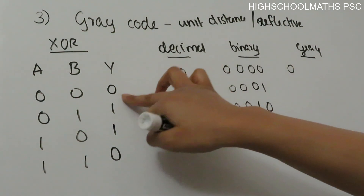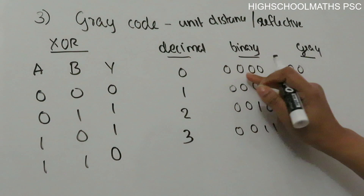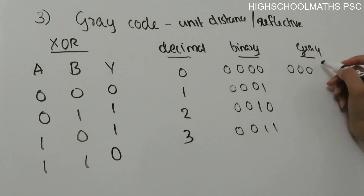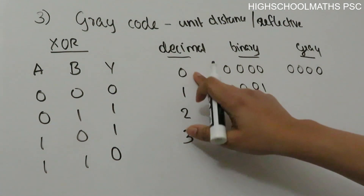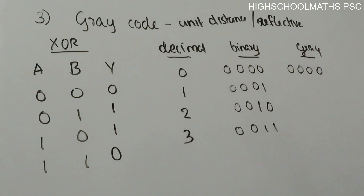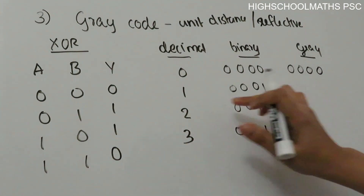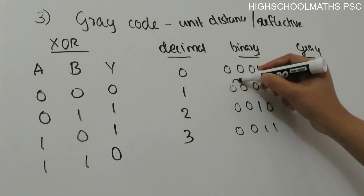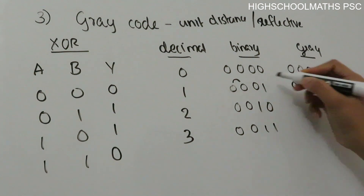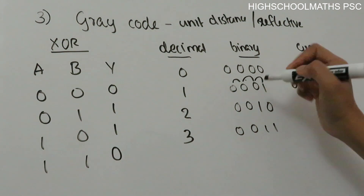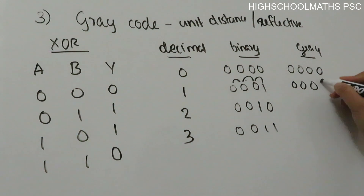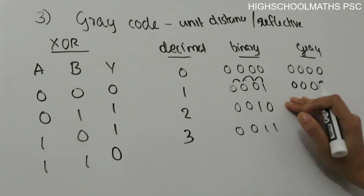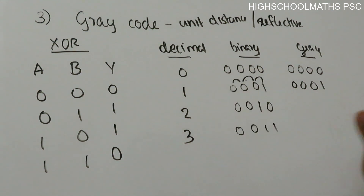For decimal 1 (binary 0001): Gray code — first bit is 0, then 0 XOR 0 = 0, 0 XOR 0 = 0, 0 XOR 1 = 1 — giving Gray code 0001. For decimal 2 (binary 0010): first bit is 0, 0 XOR 0 = 0, 0 XOR 1 = 1, 1 XOR 0 = 1 — giving Gray code 0011.